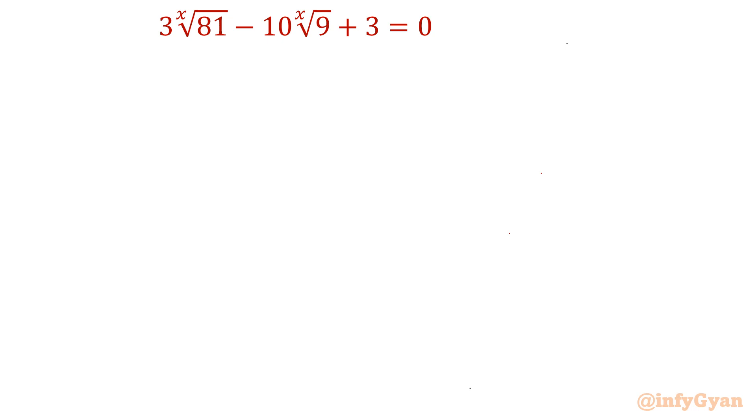In this video of exponential equations, we will be solving an interesting equation: 3 times xth root of 81 minus 10 times xth root of 9 plus 3 equal to 0.